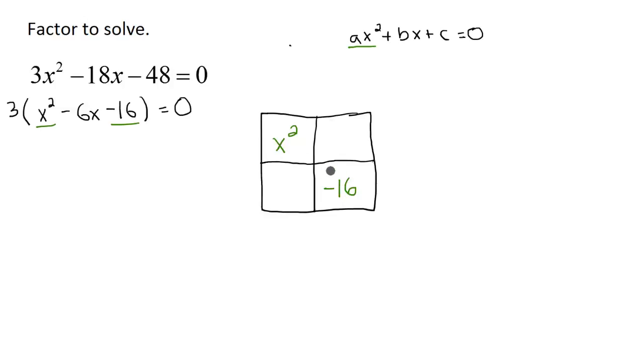Then I take this term here and multiply by this term here, and it's going to go down to the bottom right, which is -16x². Now I have to think of two factors of -16x² that also add up to be -6x. I like to set up a factoring table here to my right side to be able to do that.